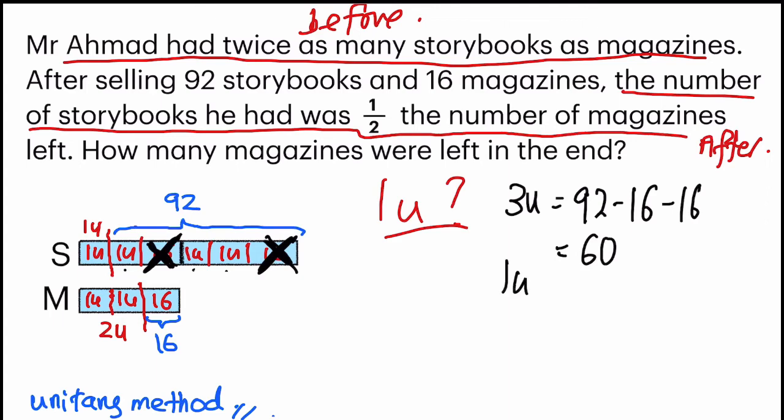So three units is equals to 60. What is one unit equals to? 60 divided by 3. And we are so close to the final answer because they asked how many magazines were left in the end. So we zoom in straight to magazines. And you know, this 16 is what Mr. Ahmad had sold.